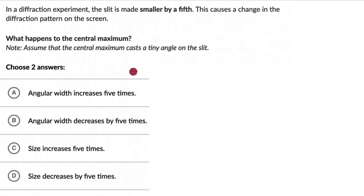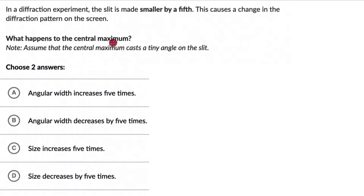Let's solve a couple of questions on single slit diffraction where the slit width is changed. For the first one, we have a diffraction experiment where the slit is made smaller by a fifth, and this causes a change in the diffraction pattern on the screen. The question is to figure out what happens to the central maximum. There is a note which says to assume that the central maximum casts a tiny angle on the slit, and we have to choose two answers out of four. Pause the video and give this a try first.